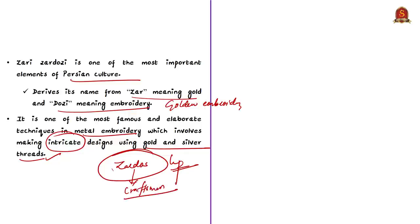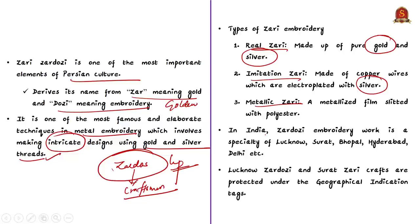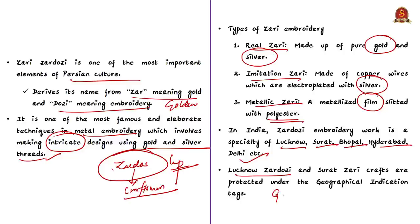Depending upon the use of raw materials, Zari embroidery is segregated into three different types: Real Zari, Imitation Zari and Metallic Zari. In Real Zari, pure gold and silver are used. In Imitation Zari, copper wires with silver coating are used. In Metallic Zari, a metallized film is slitted over polyester. Coming to its geographical location in India, Zardosi embroidery is mainly a specialty of Lucknow, Surat, Bhopal, Hyderabad, Delhi, etc. Know that the Zardosi of Lucknow as well as Surat Zari are protected under Geographical Indication tags.